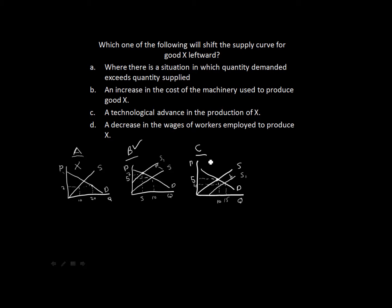So in terms of our question, we already know that B is the answer, but we can safely say that it is definitely not C. So let's do option D. A decrease in the wages of workers employed to produce X.